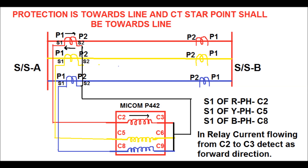For reverse polarity, we can change the polarity either in the primary side or in the secondary side. In the primary side, P2 shall be connected on the bus side and P1 shall be connected on the line side. Alternatively, keeping the primary side unchanged — that is, P1 on the bus side and P2 on the line side — we can interchange the S1 and S2 terminals in the secondary side: S2 shall be connected to C2 and S1 shall be connected to C3. This is how the polarity can be reversed for a CT.